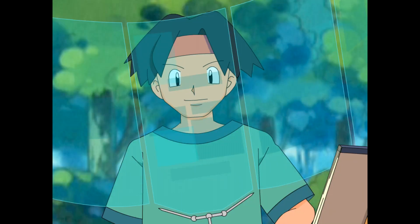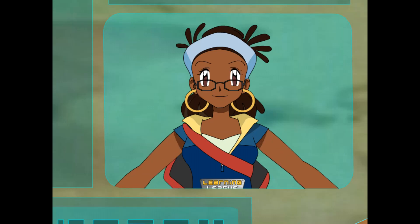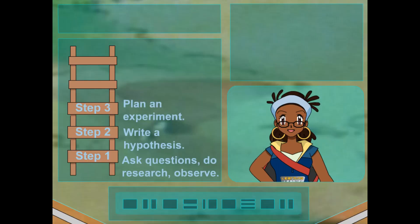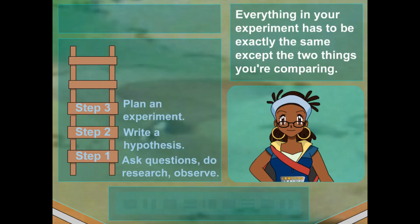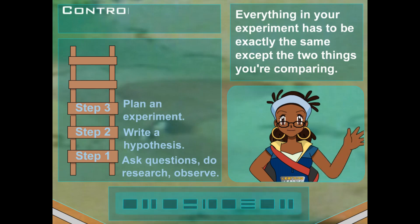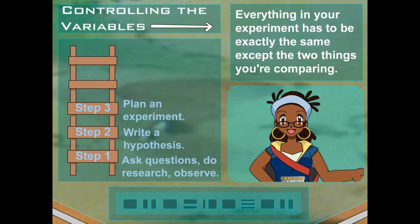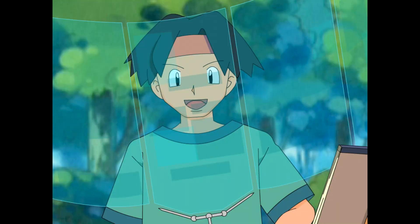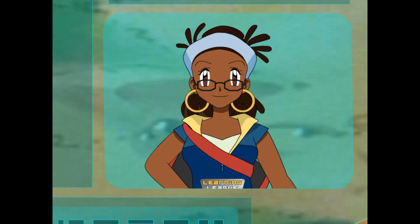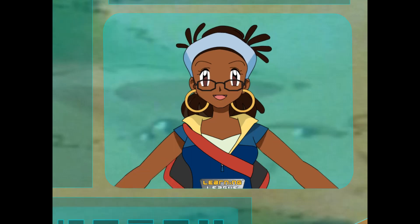Now, I bet step four should be... not so fast! When you plan your experiment, everything in your experiment has to be exactly the same, except the two things you're comparing. That's what scientists like to call controlling the variables. That makes sense! If there were other differences in the experiment, there might be other reasons for what we see happening. You've got to be fair.